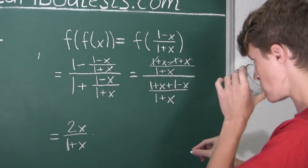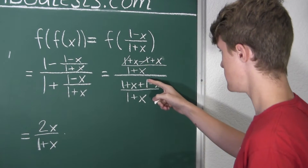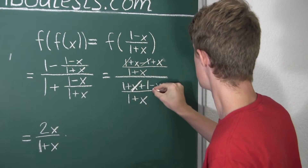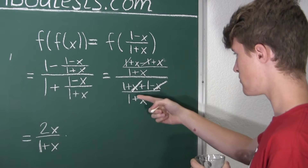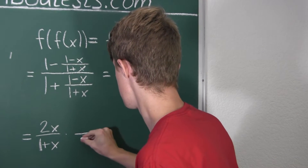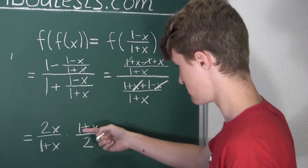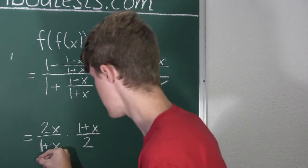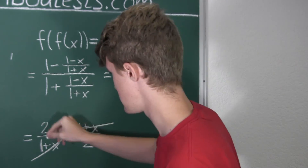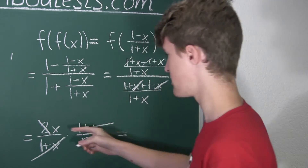Instead of dividing, we multiply by the inverse of the bottom fraction. The top fraction is 2x over 1 plus x. The bottom fraction simplifies to 2 over 1 plus x, so its inverse is 1 plus x over 2. Multiplying these together, the 1 plus x in the denominator cancels with the 1 plus x in the numerator, and the 2 and the 2 also cancel, leaving us with x in the numerator.